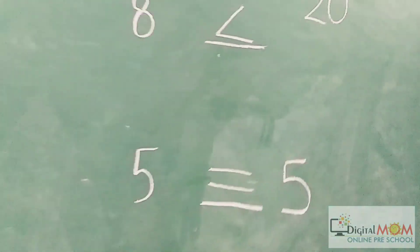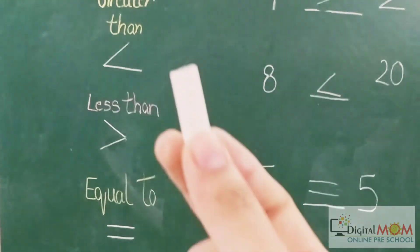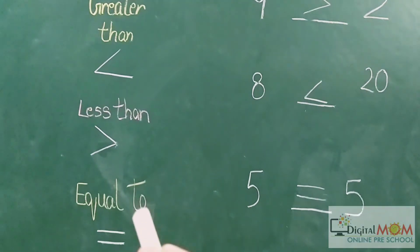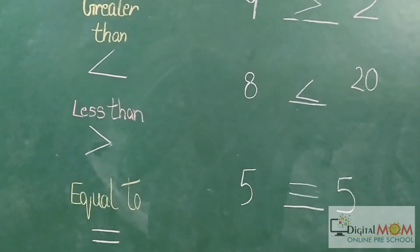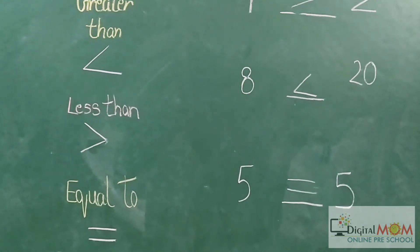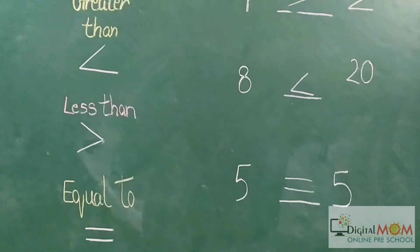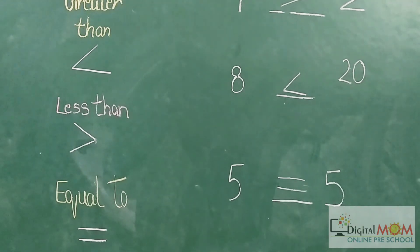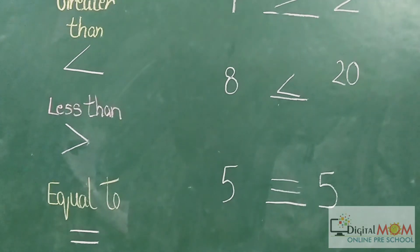So this was all about greater than sign, less than sign, and equal to. Now don't get confused. Always remember the alligator's mouth for the greater things.